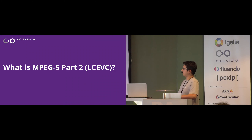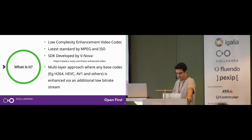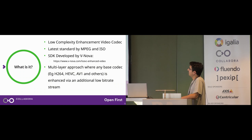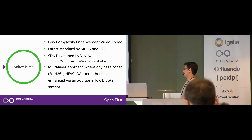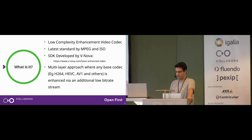LC-EVC stands for Low Complexity Enhancement Video Codec. It's the latest standard by MPEG and ISO. The codec was developed by Vinova — they have two libraries, one for decoders and one for encoders. It's copyrighted, so if you want to use it you have to contact the company. It's basically a multi-layer approach where any base codec — for example H.264, H.265, AV1, and others — is enhanced via an additional low-bitrate stream.